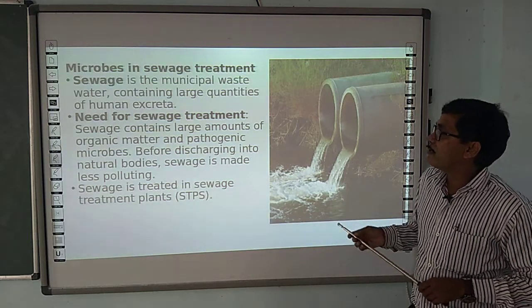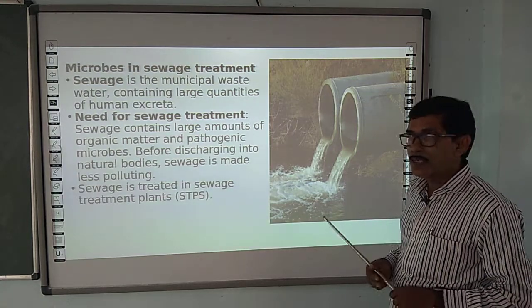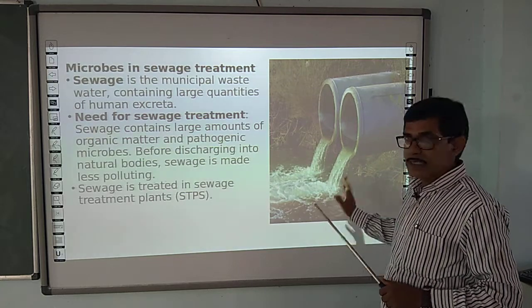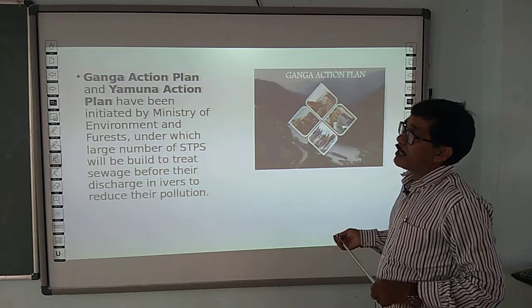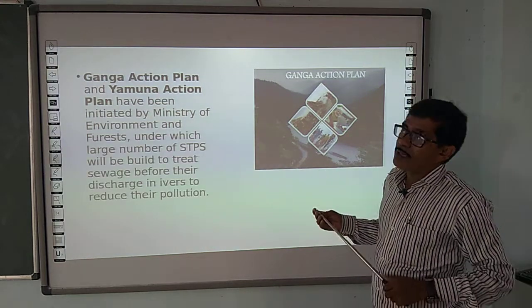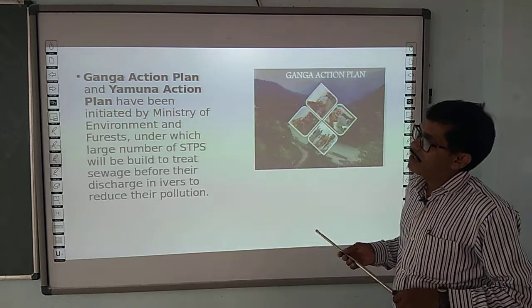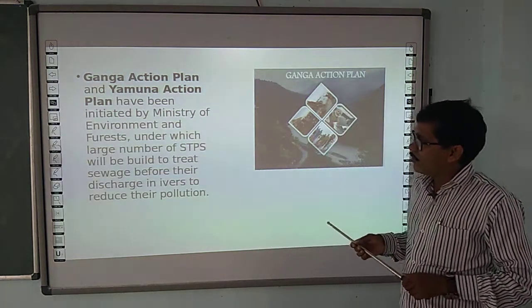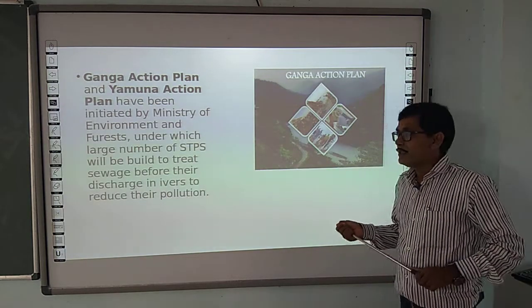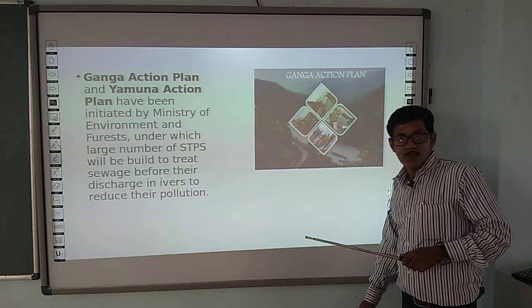Sewage is treated in a sewage treatment plant. This is a sewage treatment plant — it is a larger structure. The Ganga Action Plan was launched because the Ganga River is a holy river in India and was getting polluted. Under the Ministry of Environment and Forest, a large number of STPs — sewage water treatment plants — will be built to treat sewage before it is discharged into the river to reduce pollution.